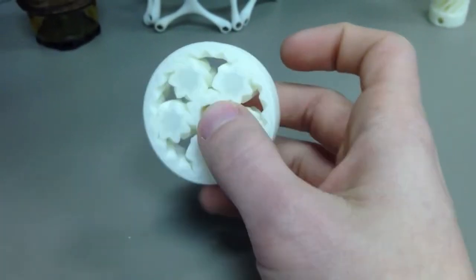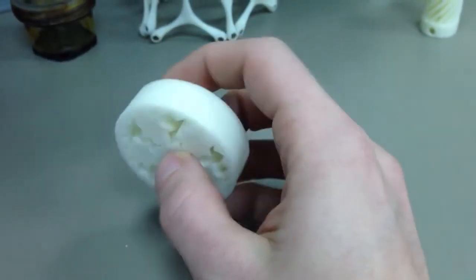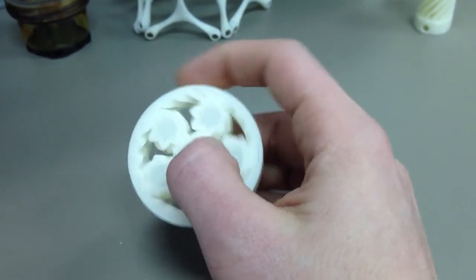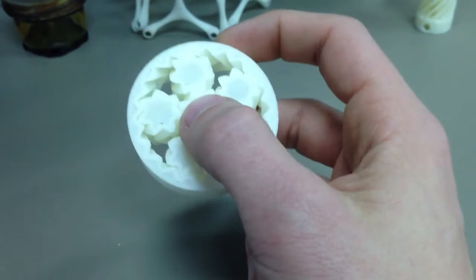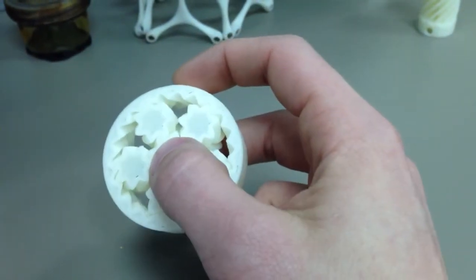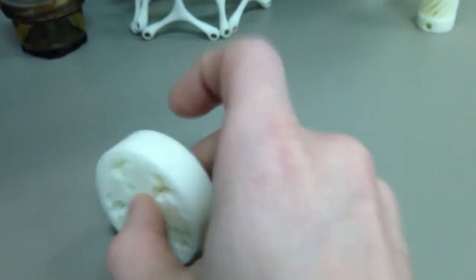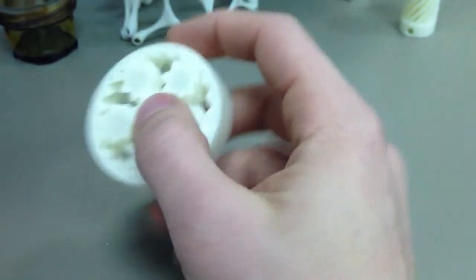This is the first Emmett gear bearing I printed on my Saladoodle 2 after doing some calibration, which is very important. If you print this sucker off and it's fused, it's not the problem of the stencil. It's probably your printer. You need to calibrate.